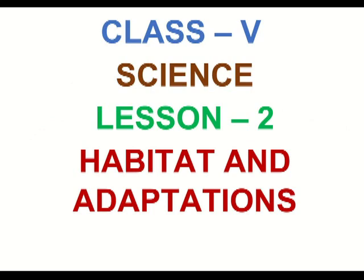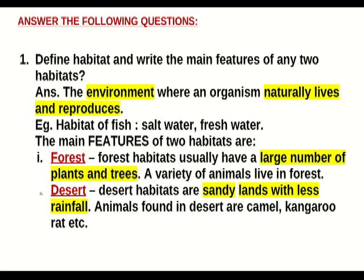Good morning students. Today we will do our lesson number two, which is Habitat and Adaptations. We will start with long question answers. Question number one: define habitat and write the main features of any two habitats. Answer: the environment where an organism naturally lives and reproduces is called a habitat. Example: the habitat of fish is salt water or fresh water.